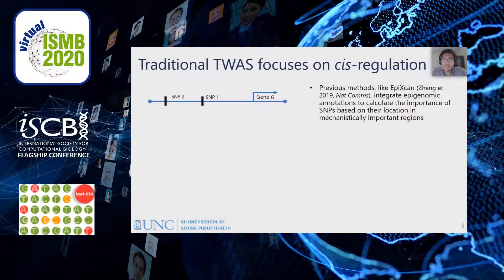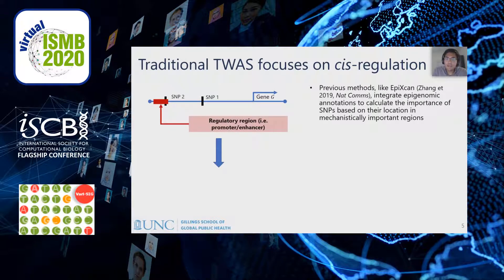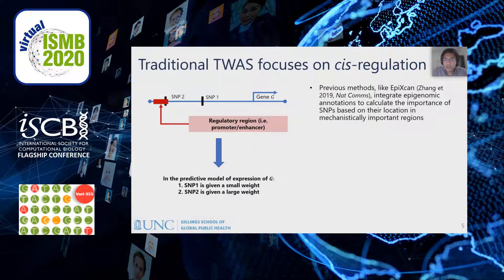More recently, TWAS has started incorporating regulatory information into its predictive models. For example, the EPIC scan method from Panos Roussos' group at Mount Sinai showed that integrating epigenomic annotations into predictive cis-only TWAS models provides gains in prediction and TWAS power. Say we have SNP1 and SNP2 that are both local to gene G. Traditional TWAS methods like PredictDB by Hari Gamazon at Vanderbilt or Fusion by Sasha Gusev at Dana-Farber weight these two SNPs equally. But if SNP2 falls in a promoter or enhancer region for gene G, EPIC scan upweights SNP2 and downweights SNP1. These kinds of annotations are useful but often limited for understudied tissues and populations.